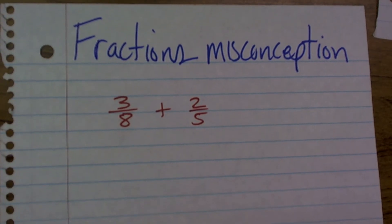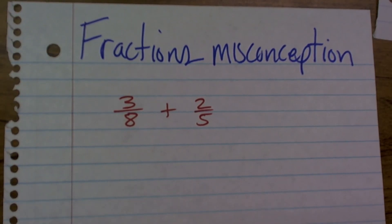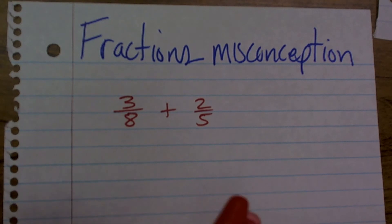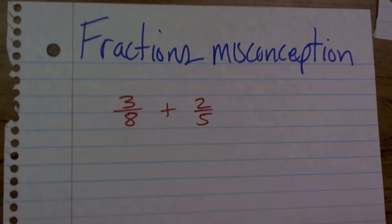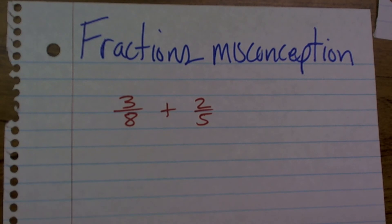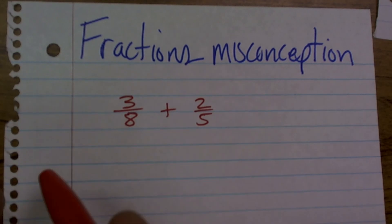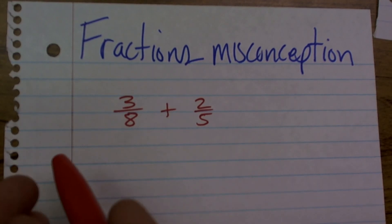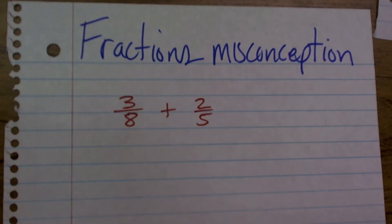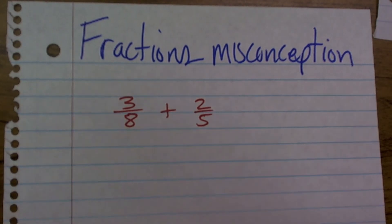Here's one of the big misconceptions that a lot of students get: they know they have to add their fractions and make sure they get common denominators, but they kind of forget what the common multiple is and just use their multiple for both fractions.